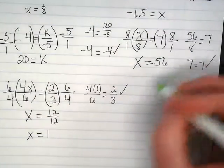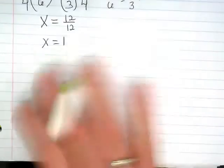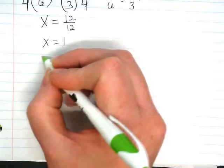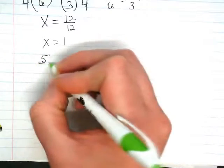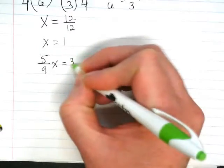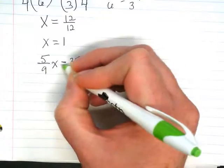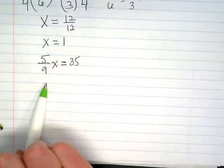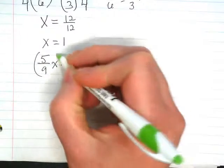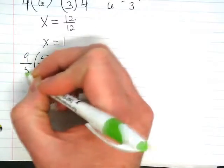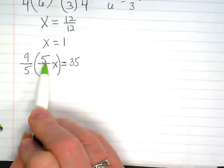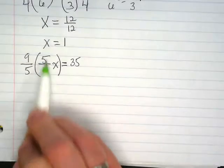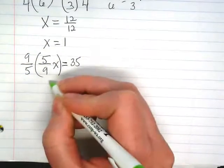What if I have a problem like, I'm going to give myself a little bit more room and go down here. What if I have 5 over 9x equals 35? Again, I'm going to multiply by the reciprocal. 9 times 5 is the same as 5 times 9, so those cancel out and become invisible x.